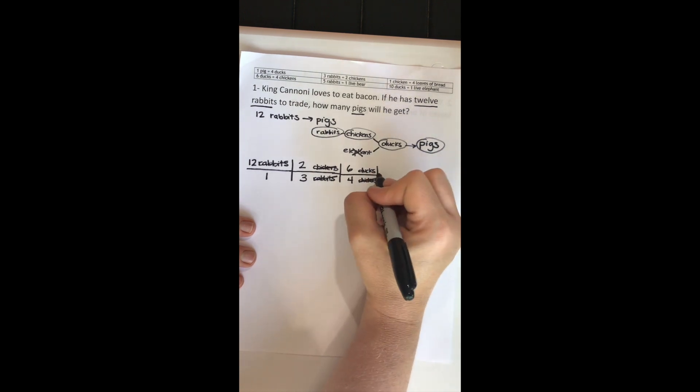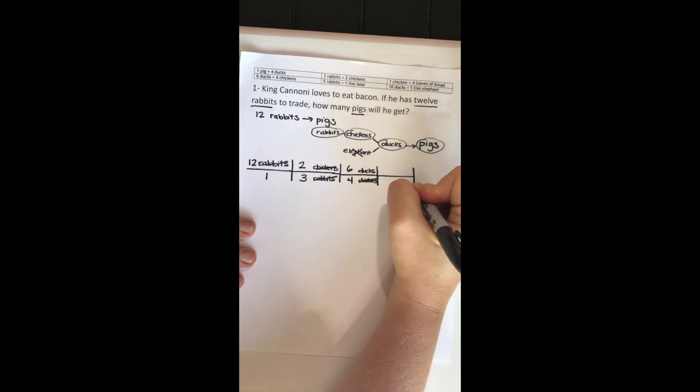One more step to go. Now I just have to go from ducks to pigs. So again, ducks on top, ducks on bottom so they will cancel out. Now I'm going to go to pigs. Four ducks is equal to one pig. Ducks cancel out. I have finally gotten to the unit that I was trying to convert to.